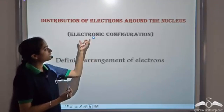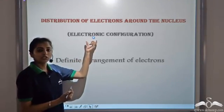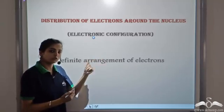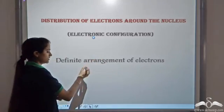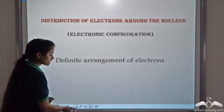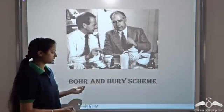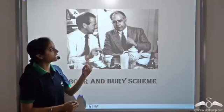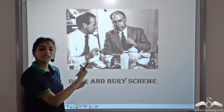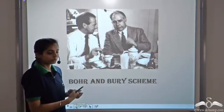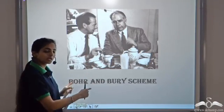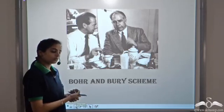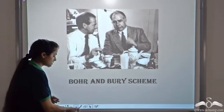To get the electronic configuration, it follows a certain set of rules. These rules were given by two scientists, Bohr and Berry. They gave a set of rules and these are known as the Bohr and Berry scheme. So let's see what this scheme says.